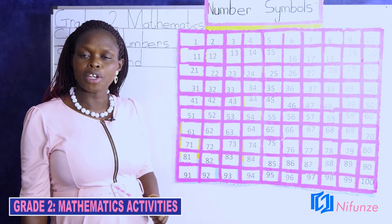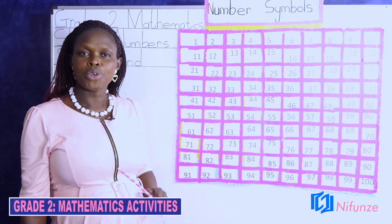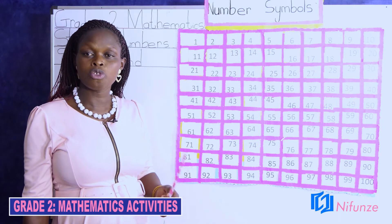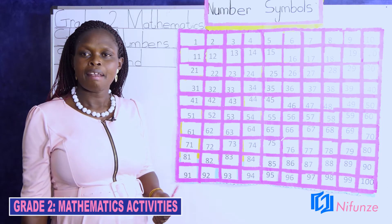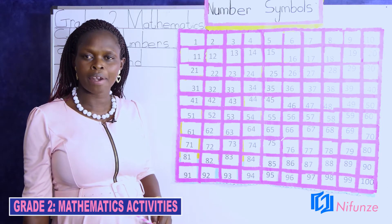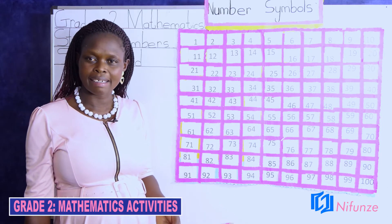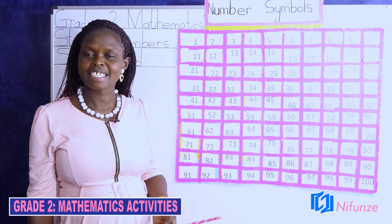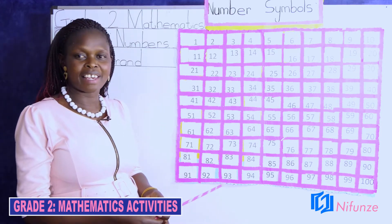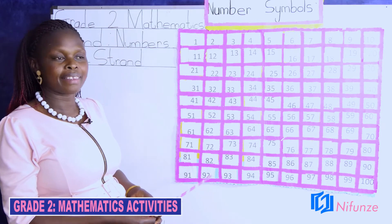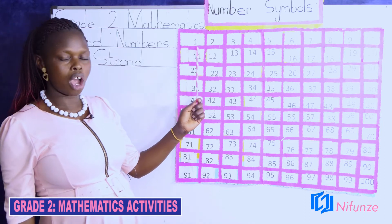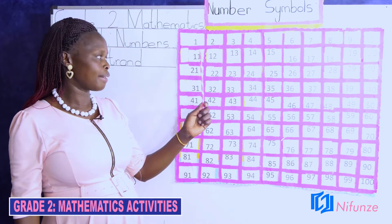In grade 1, you learned about numbers 1 to 50. Now we shall do numbers 1 to 100. Please, can you listen to me as I read and then you are going to read on your own.